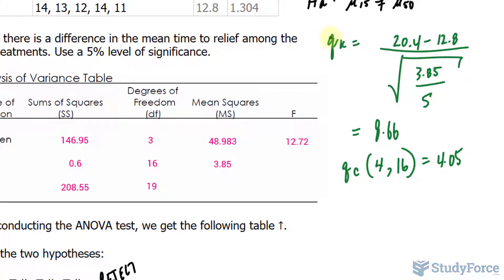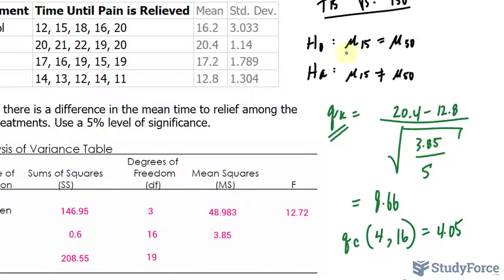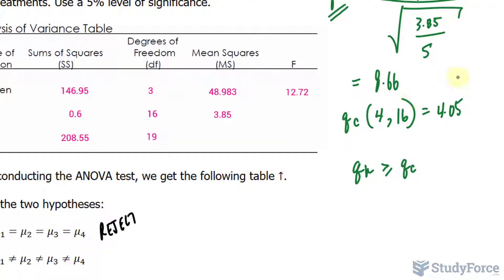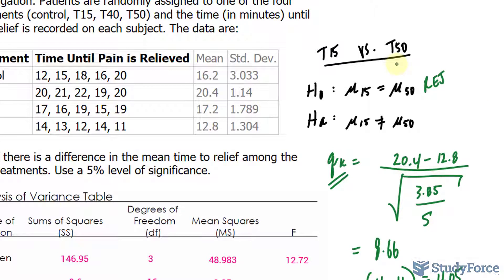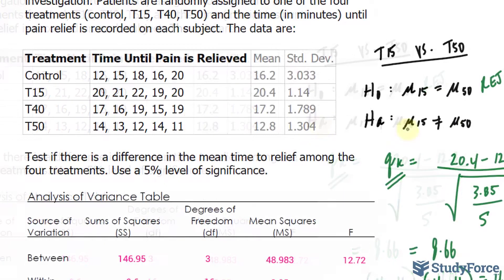If this value is greater than or equal to the critical value, you have enough statistical evidence to reject the null hypothesis in favor of the alternative. As you can tell, 8.66 is greater than 4.05. Hence, we have enough evidence at 0.05 significance level to reject the null hypothesis. This means that T15 is different than T50. Therefore, we continue the cycle, comparing T15 versus the second smallest mean, being 16.2 for the control.